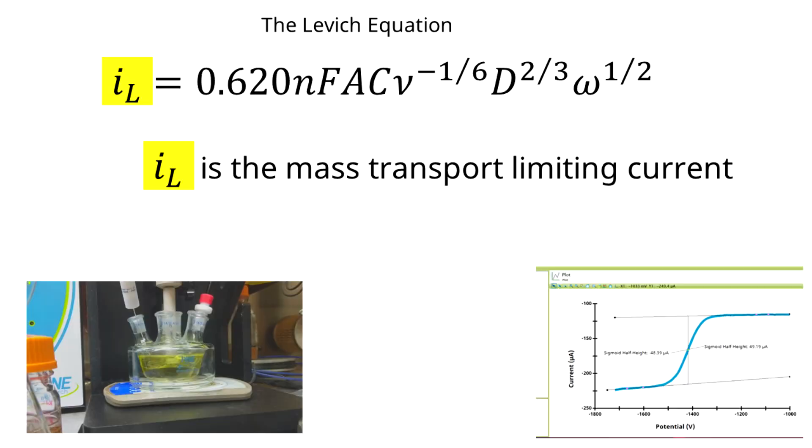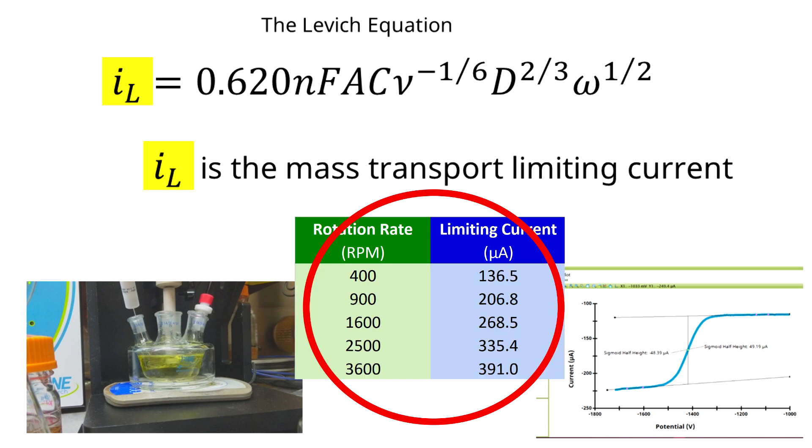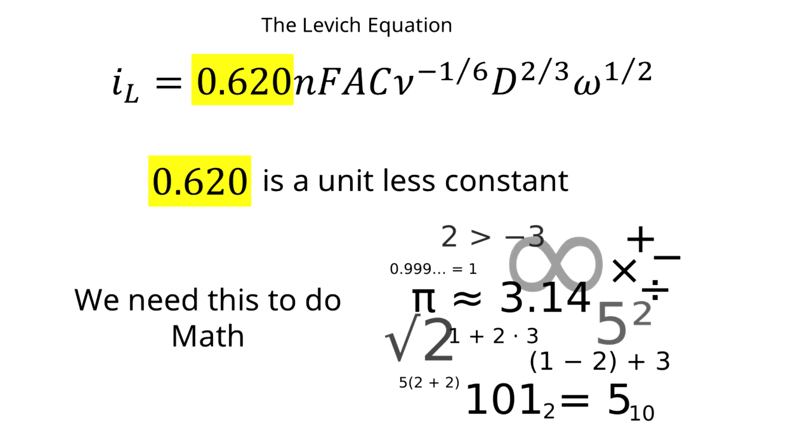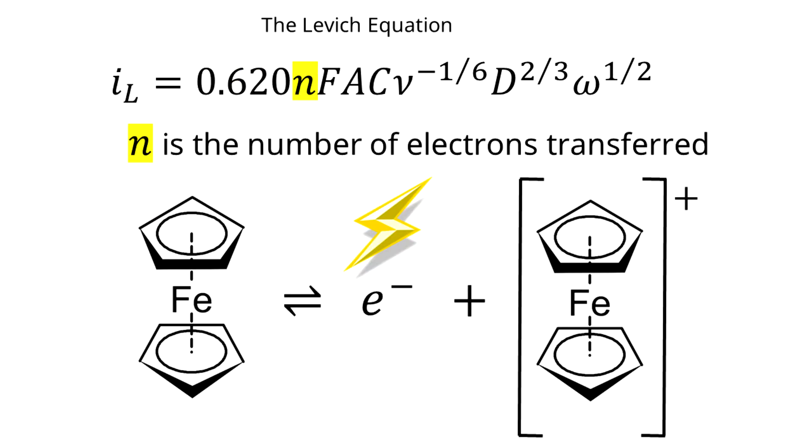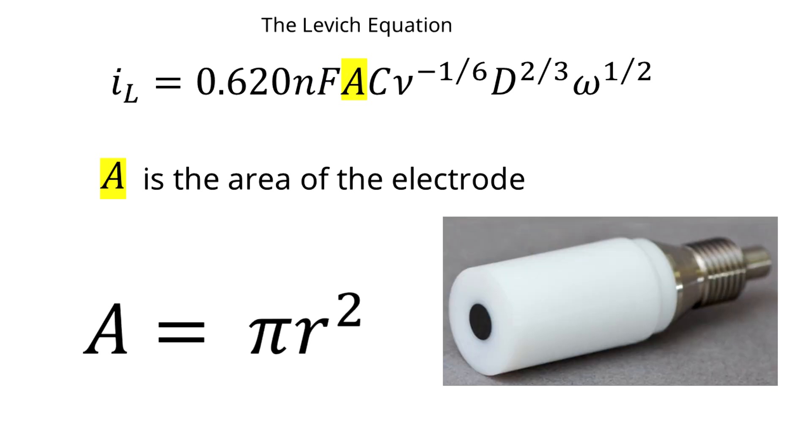This is the Levich equation. i_L is our mass transport limiting current. That's the data we collected from the rotating disk electrode experiments. There is a constant 0.620 in front. n is the number of electrons transferred in our redox reaction. In the case of ferrocene to ferrocinium, n is 1. F is Faraday's constant. A is the area of the working electrode.